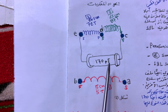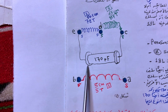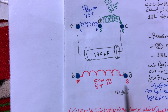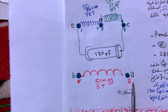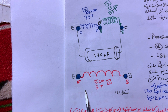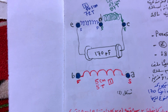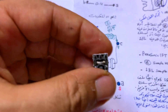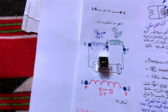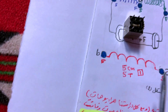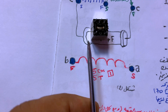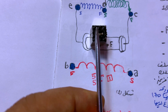We have an internal capacitor with 170 pF. Wire number one runs from pin A to pin B — we start at A and finish at B — and we have five turns over five centimeters in length. The pins are labeled A, B, C, D, and E.